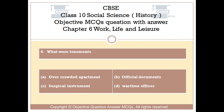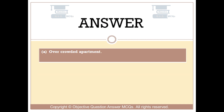Question number 6: What were tenements? Option A: Overcrowded apartment. Option B: Official documents. Option C: Surgical instrument. Option D: Wartime offices. The right answer is Option A: Overcrowded apartment.